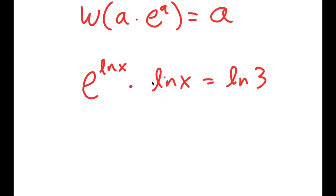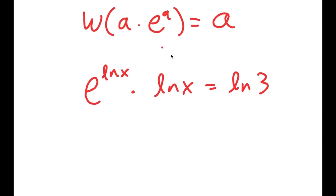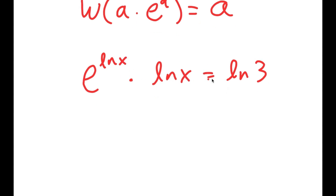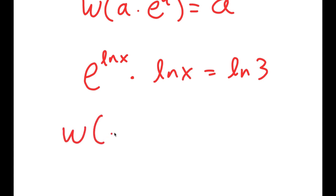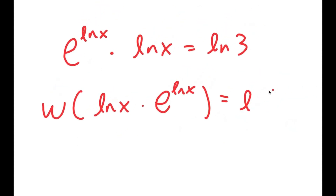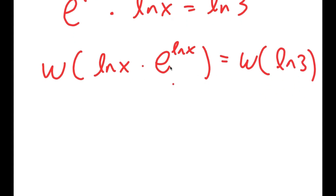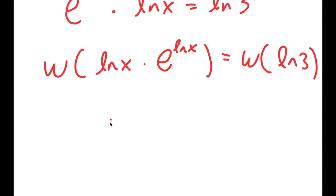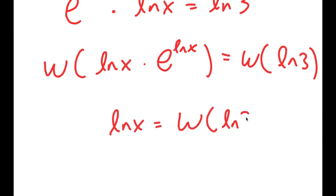Notice how this is in the form a times e to the power of a, with a being ln x. So it's ln x times e to the power of ln x is equal to ln 3. Now, if I take the W Lambert function on both sides, I get W of ln x times e to the power of ln x is equal to W of ln 3. And this simplifies to ln of x is equal to W of ln 3.